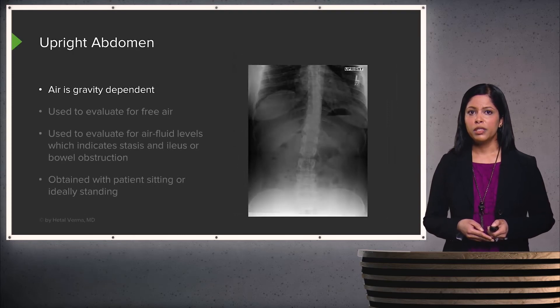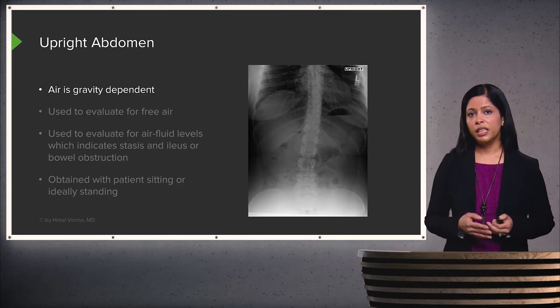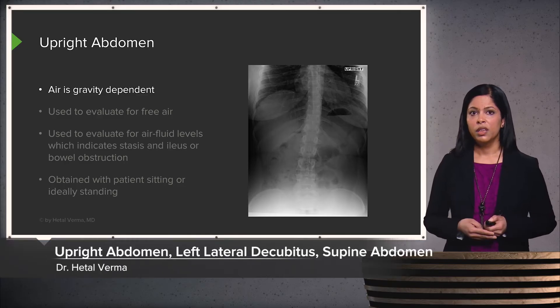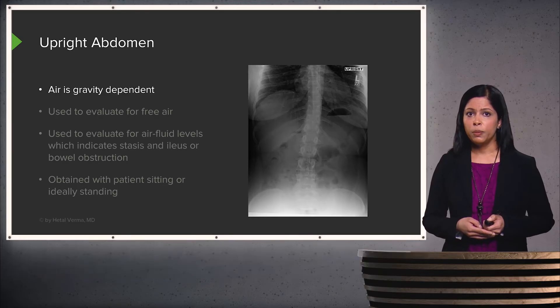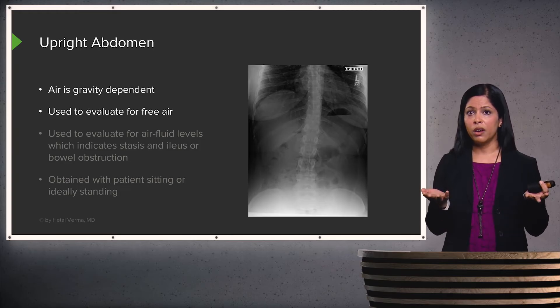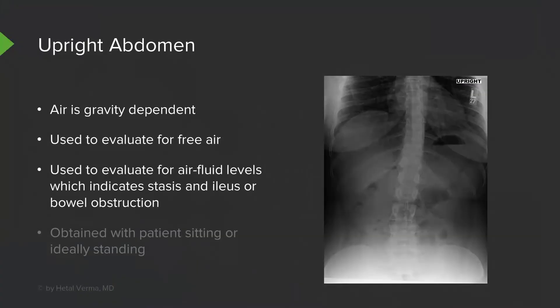Abdominal films can be performed in three different projections, each with different uses. Typically, it's performed as an upright film. Since air is gravity dependent, it's very useful for evaluating free air, which will rise to the top and often be seen just underneath the diaphragm. It's also used to evaluate for air-fluid levels, which can indicate stasis, ileus, or bowel obstruction — when the patient is standing upright, air rises to the top of the bowel and the fluid remains at the bottom.